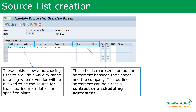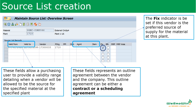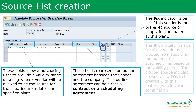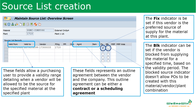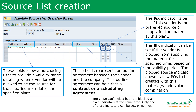The fixed source indicator is set if this vendor is the preferred source of supply for the material at this plant. The system will use this indicator to select the fixed source in the source determination process. There is also a block indicator, which can be set if the vendor is blocked from supplying the material for a specified time based on the validity period. The blocked source indicator does not allow purchase orders to be created with this material, vendor, or plant combination. Note that you cannot select both the block and fixed indicators at the same time — only one can be set, or neither, because logically it is not allowed.